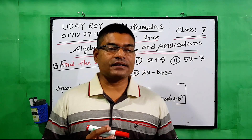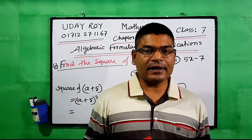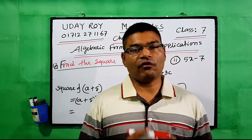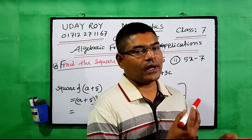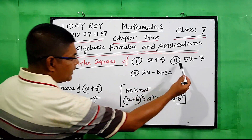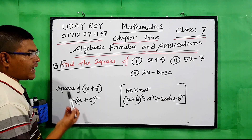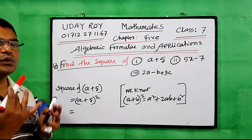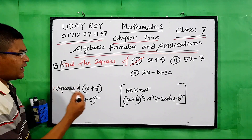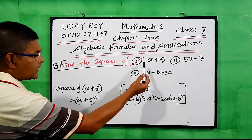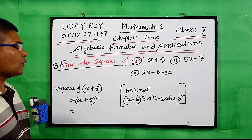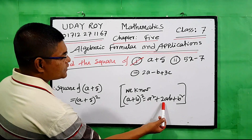Now we have to find the square. We will do three examples: (a + 5), (5x - 7), and (2a - b + 3c). Starting with Number 1: find the square of (a + 5). So, square of (a + 5) = (a + 5)². We know the rule: (a + b)² = a² + 2ab + b².